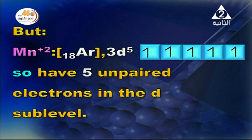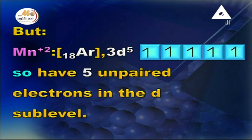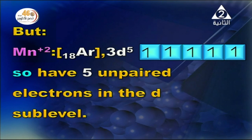Manganese (atomic number 25) has electronic configuration [Ar] 4s2 3d5. In manganese(2) chloride, Mn2+ has electronic configuration [Ar] 3d5, giving 5 unpaired electrons in the D sub-level, making it paramagnetic.